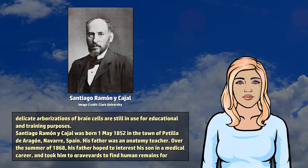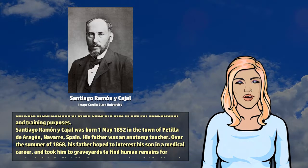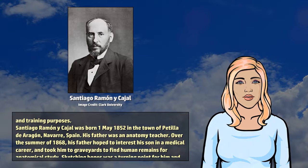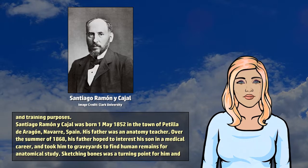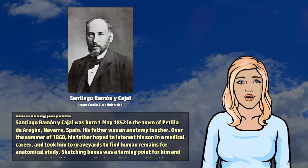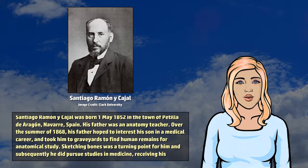Santiago Ramon y Cajal was born May 1, 1852 in the town of Patila de Aragon, Navarre, Spain. His father was an anatomy teacher.